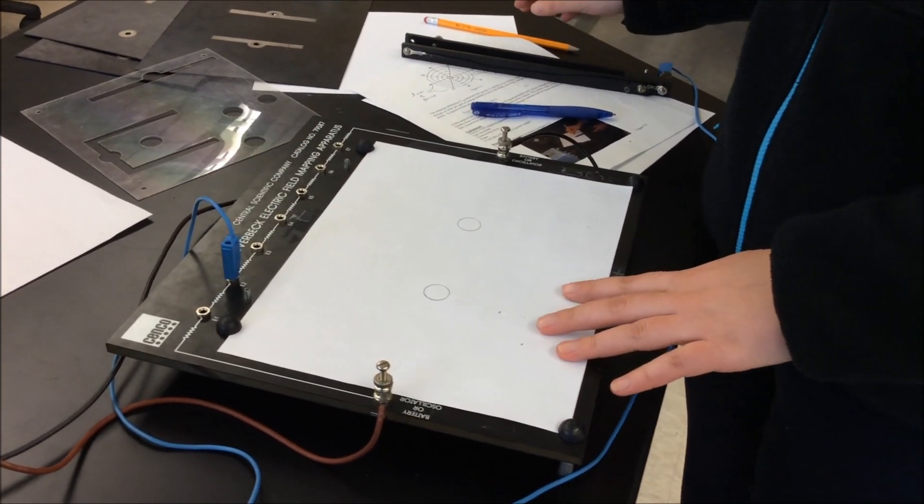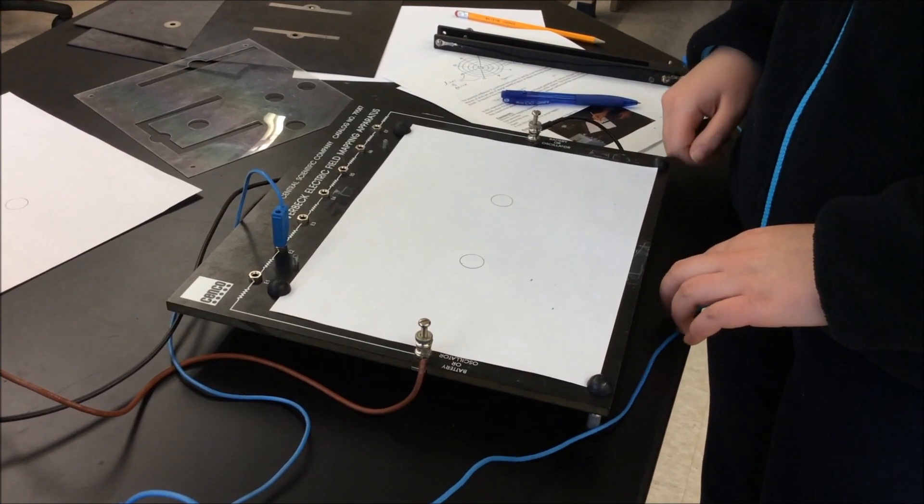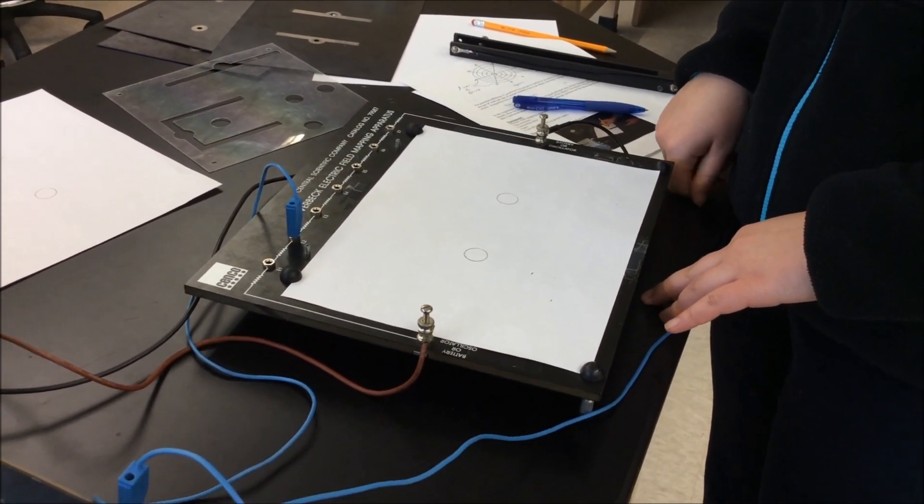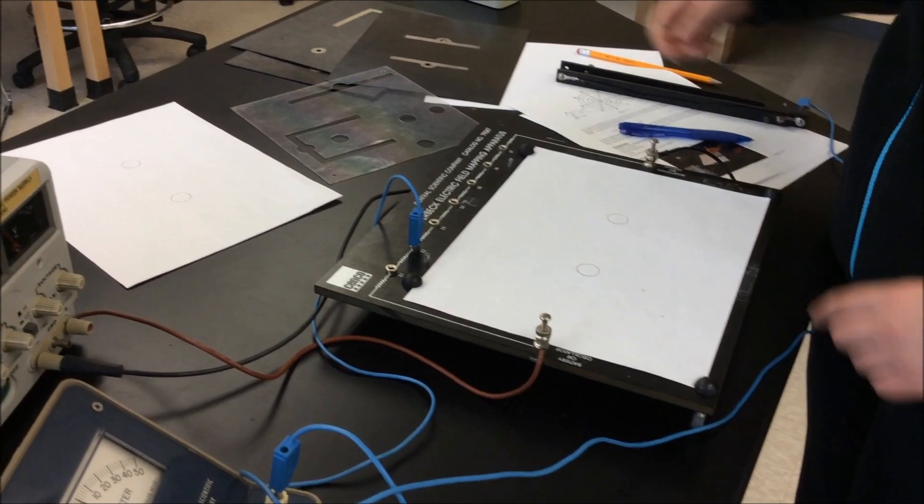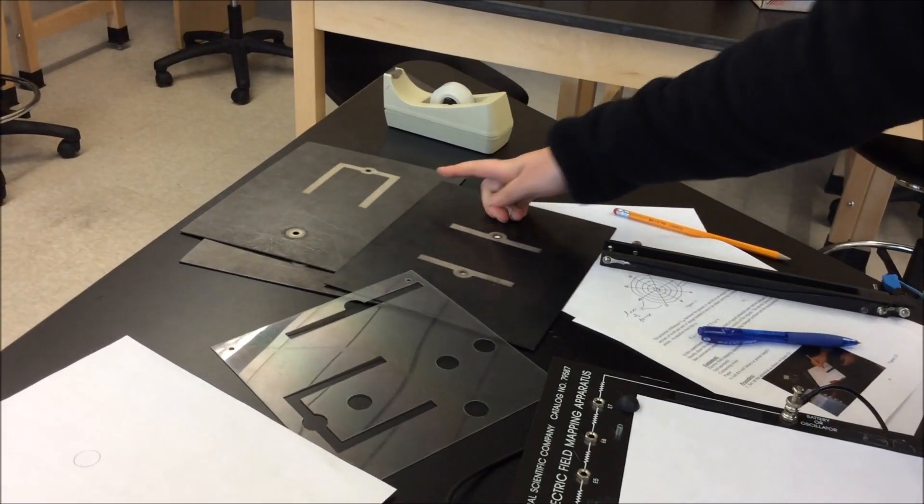Then after you finish drawing all the equipotential lines, you're going to draw the electric field lines which are perpendicular to the equipotential lines as stated in the lab. When you finish all this, you're going to repeat the entire thing using different shapes of electrodes.